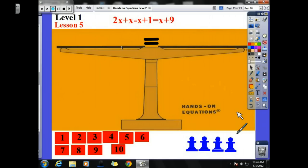So now I have 2x plus x minus x plus 1 equals x plus 9. It's very simple. 2x's, put them up there. Plus an x, put it up there. Minus an x, take it off and add 1. And on the other side, I have an x and a 9.